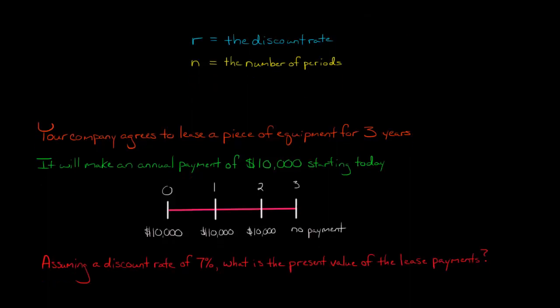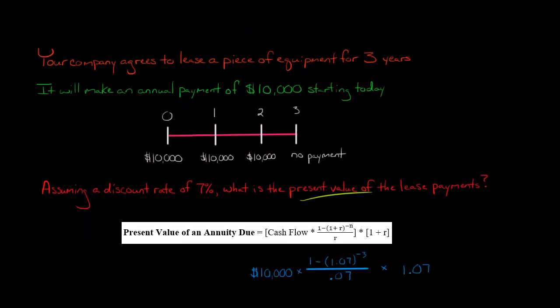Let's say the discount rate is 7%. What would be the present value of these lease payments? We could take the present value of each cash flow and add them up, but we can also use our formula.